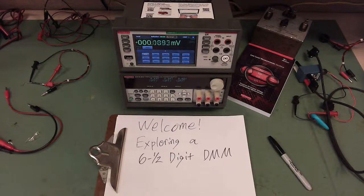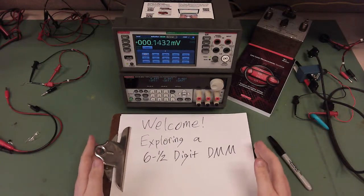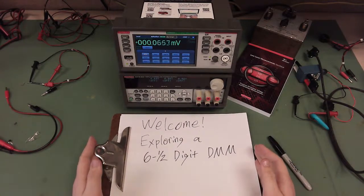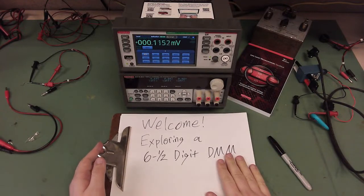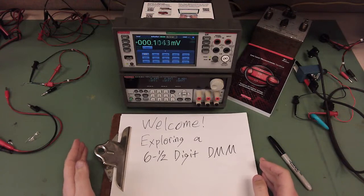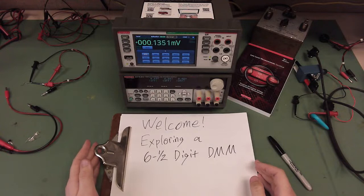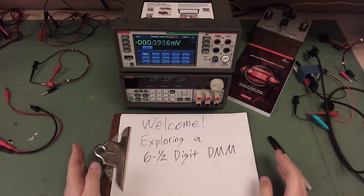Greetings everyone. Welcome to another Keithley livestream, where today we're going to be exploring the features of a 6.5-digit DMM. I'm going to be going through all 15 functions that are commonly found on some modern 6.5-digit DMMs. Along the way, we're going to explore some other features that you can expect on a 6.5-digit desktop digital multimeter.